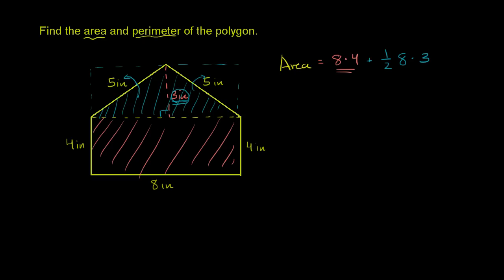Let's go back and calculate it. This is going to be 32 plus one half times 8 is 4, and 4 times 3 is 12. So our area for the shape is going to be 44.